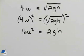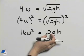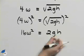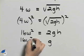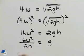Now we can isolate g by dividing both sides by 2 and h. That will look like 16w squared divided by 2h.